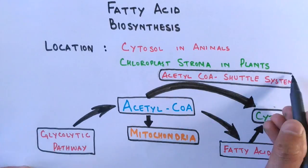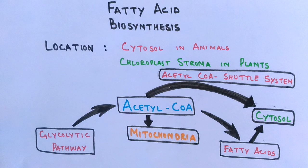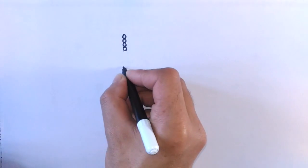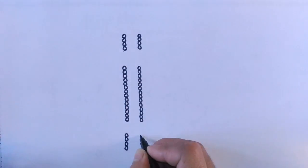For this we have a mechanism called the acetyl CoA shuttle system, which transports the acetyl CoA molecule out of the mitochondria into the cytosol for fatty acid biosynthesis. In this video we'll discuss the acetyl CoA shuttle system first, and in the next part we'll discuss fatty acid biosynthesis in detail. Now let's look at the shuttle system.